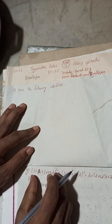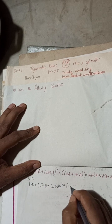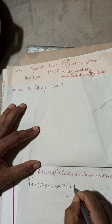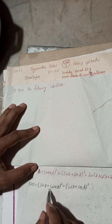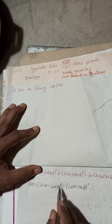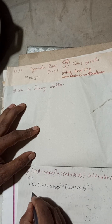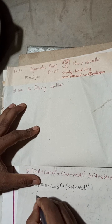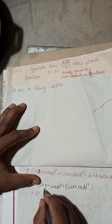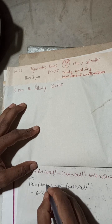Taking the LHS: (sin A + cosec A) whole square plus (cos A + sec A) whole square. Now applying the formula (a + b) whole square — so sin A is taken as 'a' here.